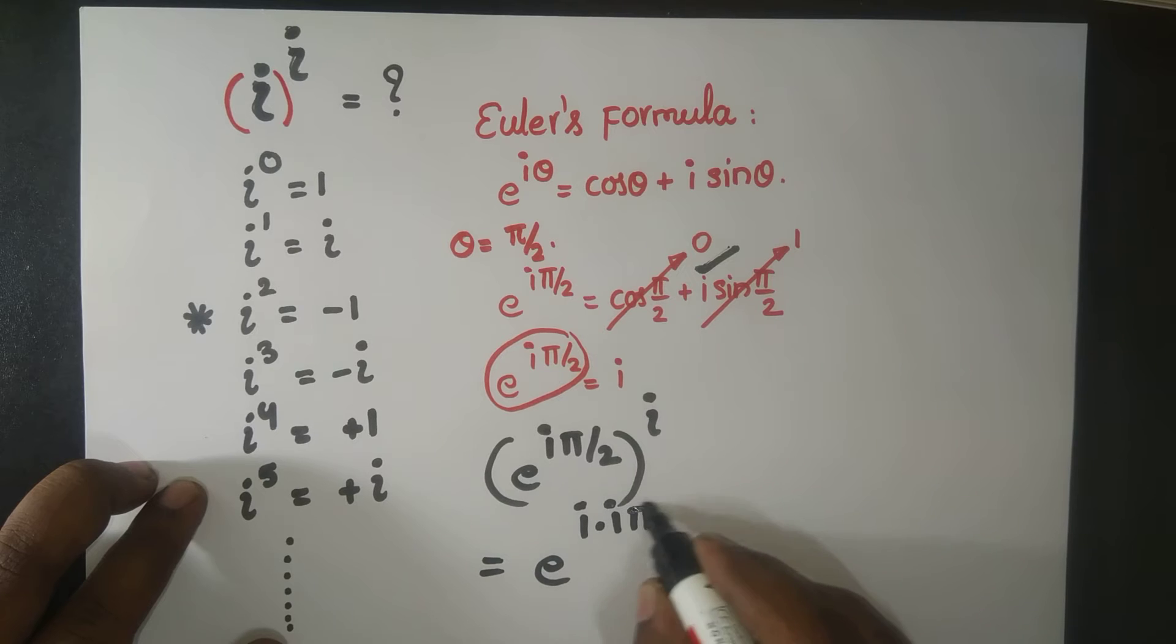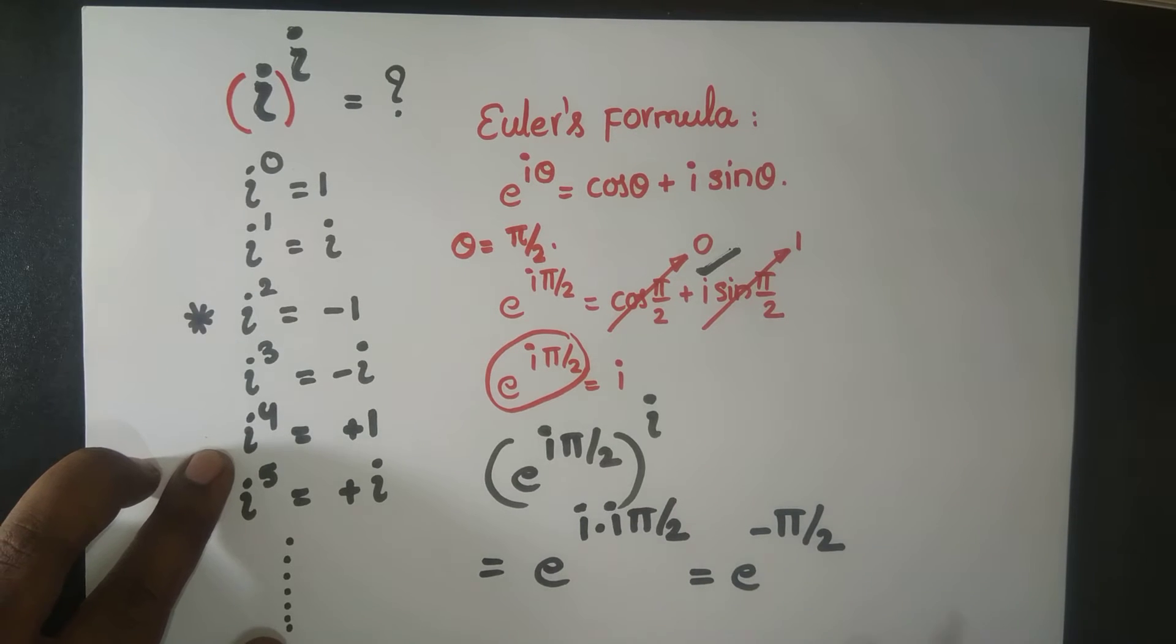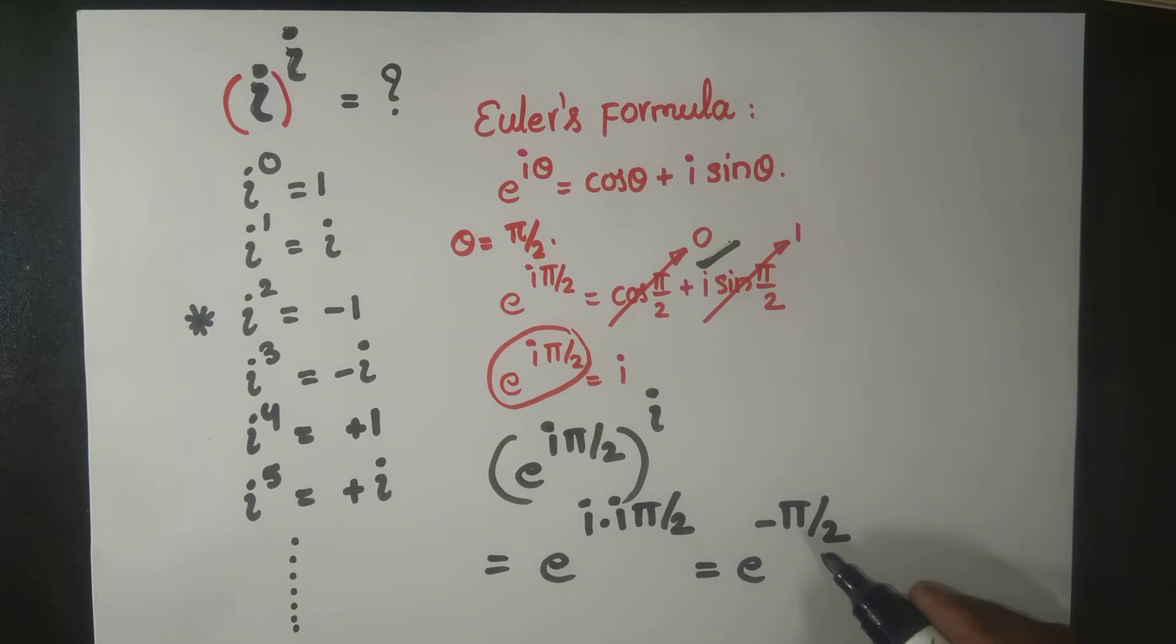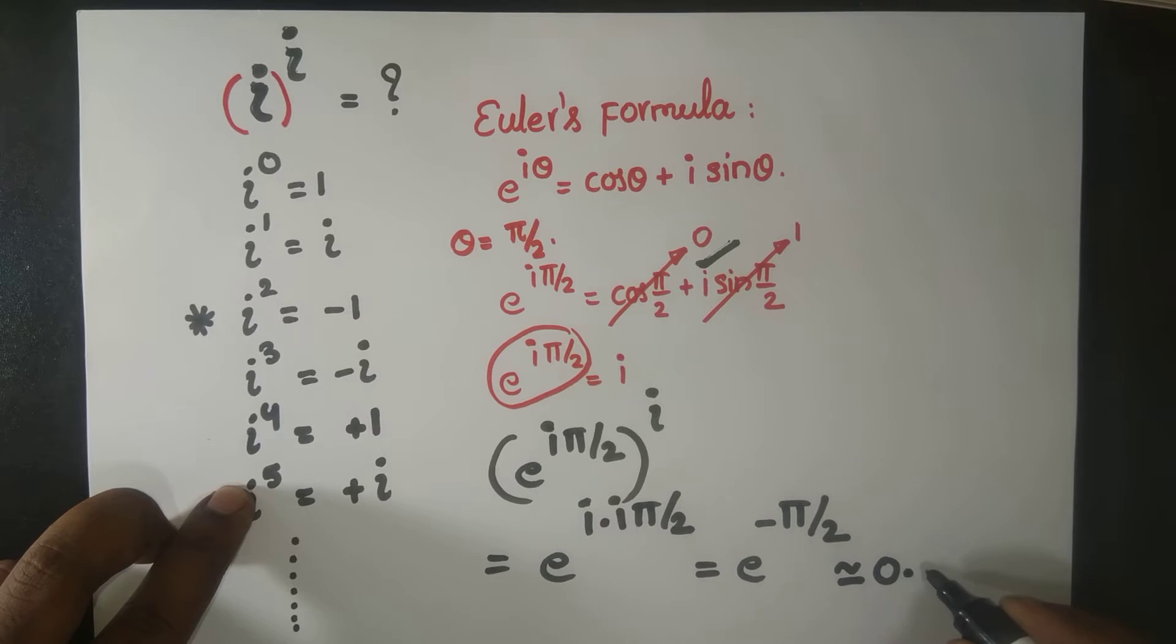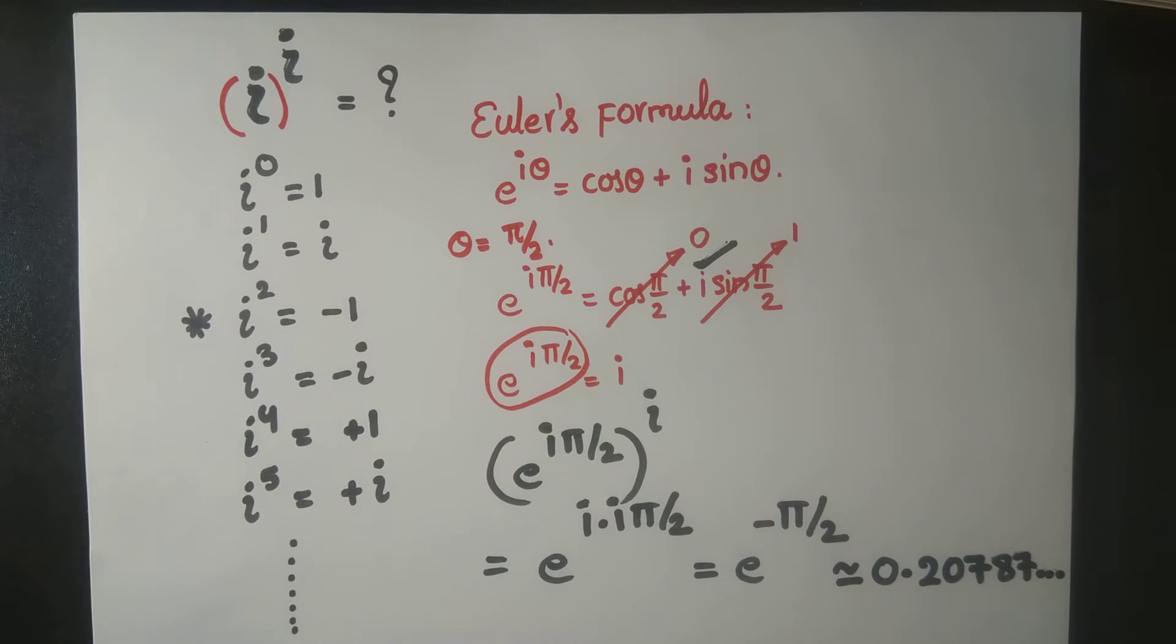This is e^i multiplied by i, times π/2. And this is e to the power of minus π/2. Now you can plug in this π as 3.1415 and so on. You would get approximately 0.207879 and so on. That's it. So i to the power of i is a simple real number like this.